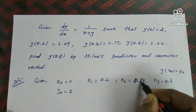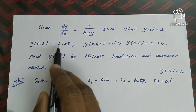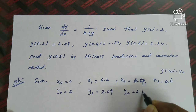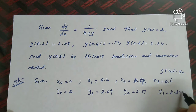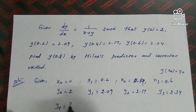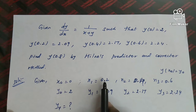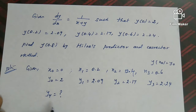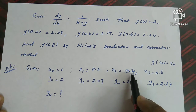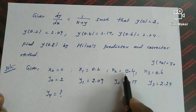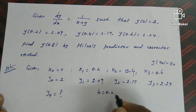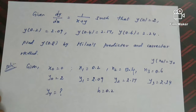So x₂ = 0.4 and x₃ = 0.6, with corresponding values y₀ = 2, y₁ = 2.09, y₂ = 2.17, y₃ = 2.24. The question is to find y(0.8), which means finding y₄. From the x data, x₁ - x₀ = 0.2, x₂ - x₁ = 0.2, x₃ - x₂ = 0.2, so the step size h = 0.2.